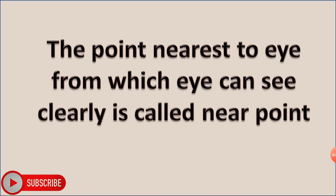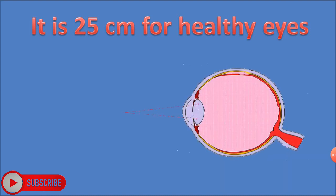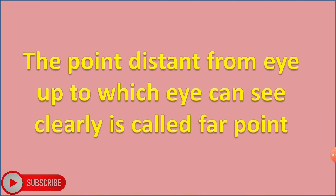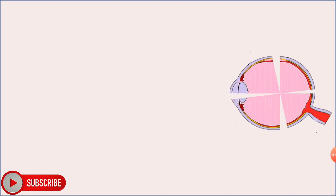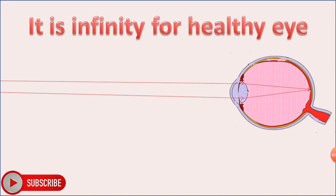The point nearest to the eye from which the eye can see clearly is called the near point. It is 25 cm for healthy eyes. The point farthest from the eye up to which the eye can see clearly is called the far point. It is infinity for a healthy eye.